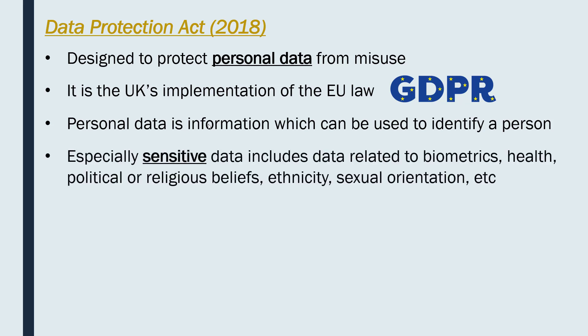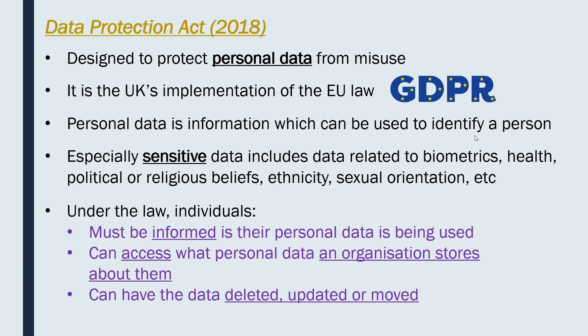More sensitive personal data — which is protected even more — includes biometric data like your fingerprint, health data such as medical history, beliefs like political or religious views, ethnicity, and sexual orientation. These are things we don't want companies to misuse, and companies must take special care with them because they are so private. The law is very extensive, so we'll go through just the key points.